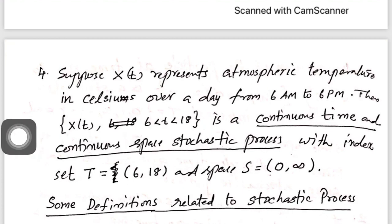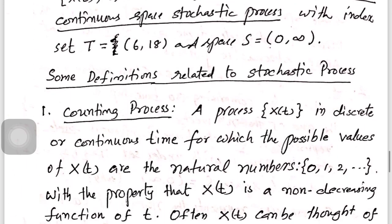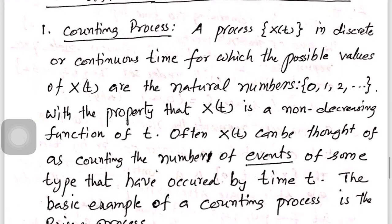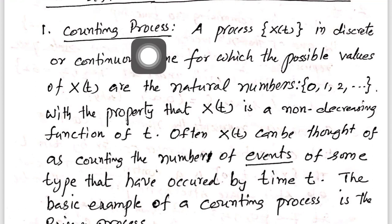All these things we discussed in the last class. Now we will complete the introduction by adding some simple definitions related to a stochastic process. These concepts are very important, and the details will be discussed whenever necessary in subsequent chapters. We have three important definitions: the first one is a counting process. A counting process is a stochastic process but it must satisfy some properties.